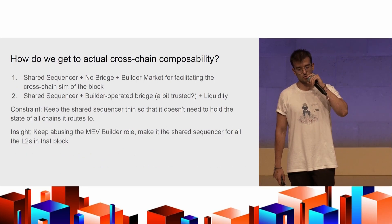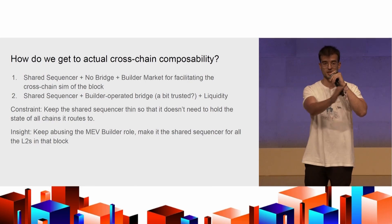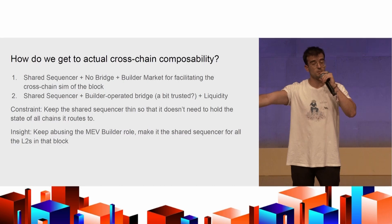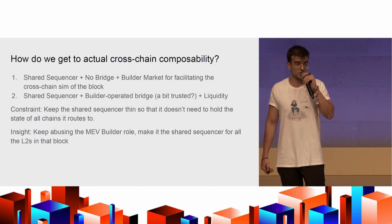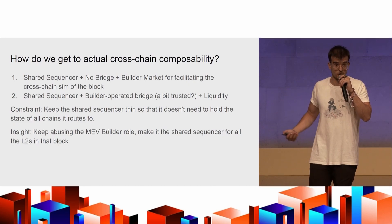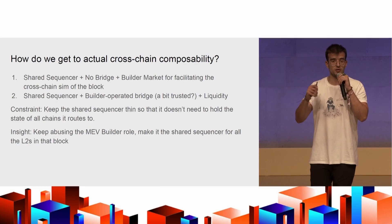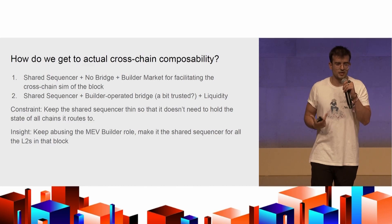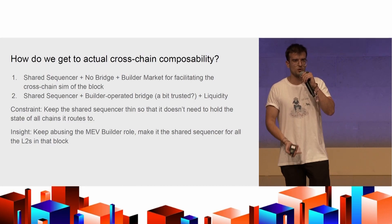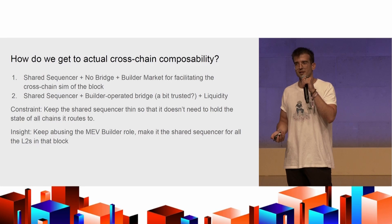One concrete proposal for cross-chain composability: you can have a shared sequencer that only guarantees inclusion without execution, but then you have a bunch of builders who cross-chain simulate. Builders would be running nodes and simulation engines for every chain they support, landing a bundle with transactions for rollup one, two, and three together. The insight is that we take the MEV builder role and bundle more functionality into it — make it heavier. The shared sequencer is, funnily enough, the MEV builder.